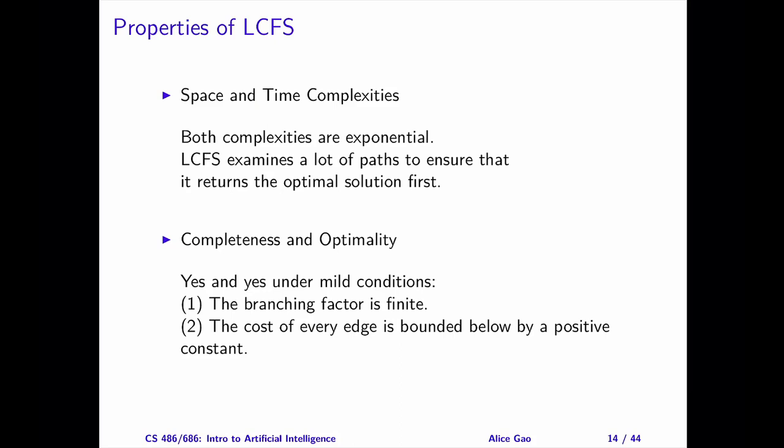The second condition is that the cost of every edge is bounded below by some positive constant. In other words, the cost of an edge cannot be arbitrarily small. Without such bounds, there could be infinite paths with a finite cost. The Zeno's paradox devised by Aristotle illustrates the idea of this case.